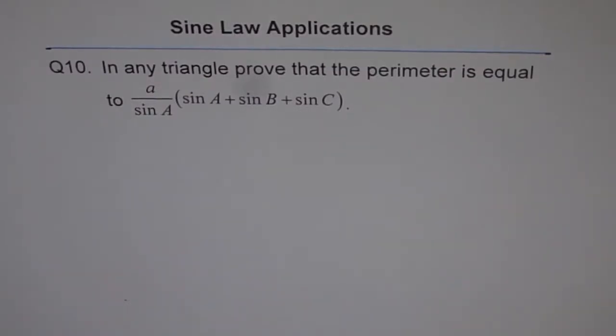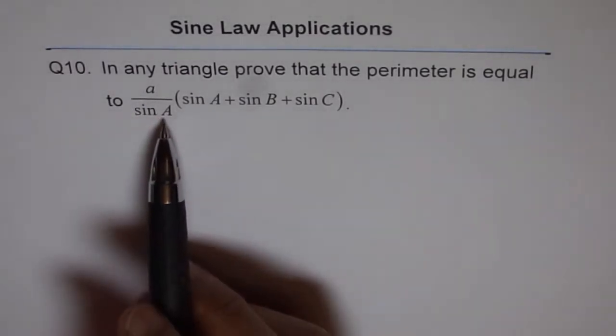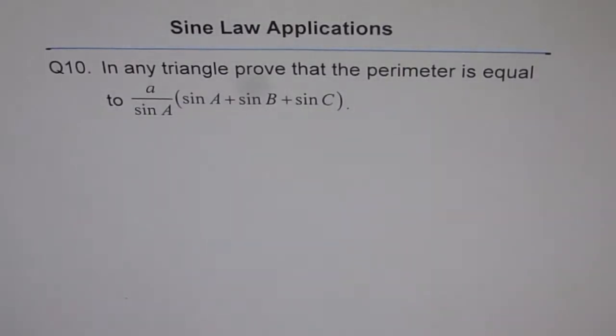Sine law applications, question 10. In any triangle, prove that the perimeter is equal to a over sine A times (sine A plus sine B plus sine C). Very interesting question and a very simple one also. Try this